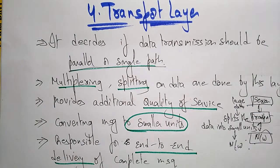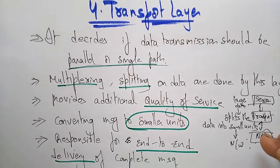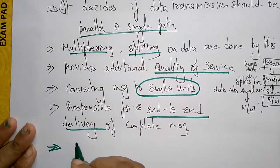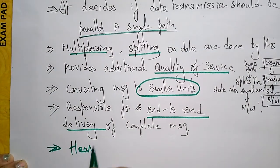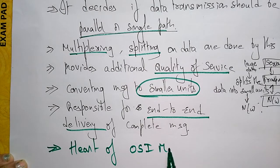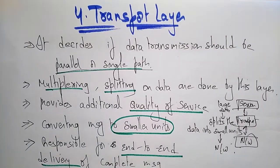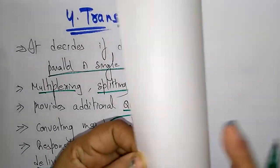Because of all these many functions, the transport layer is called the heart of the OSI model. Now let us see the services that are provided by the transport layer.